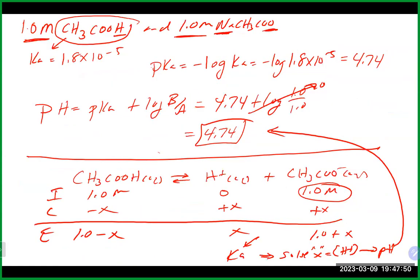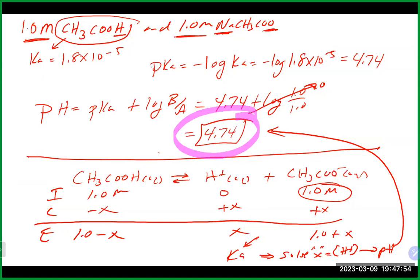Did our buffer work? We started with a pH of 4.74, added some HCl, and it went to 4.65 — not a very big jump. It maintained its pH but moved in the correct direction: since we added an acid, we expect pH to go down, and it did, but only a small drop.